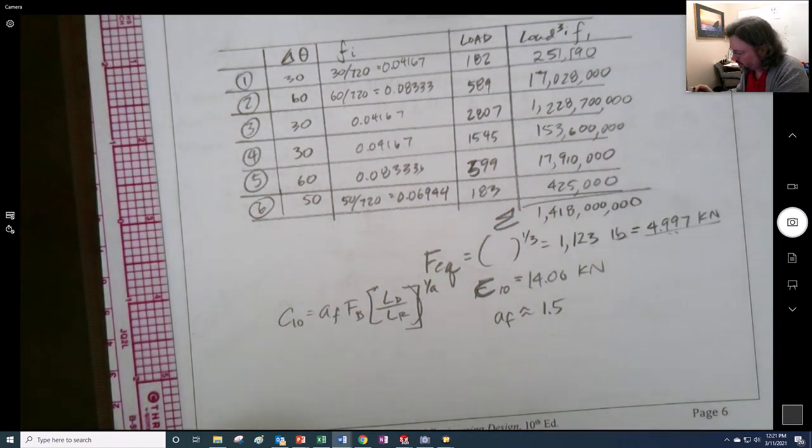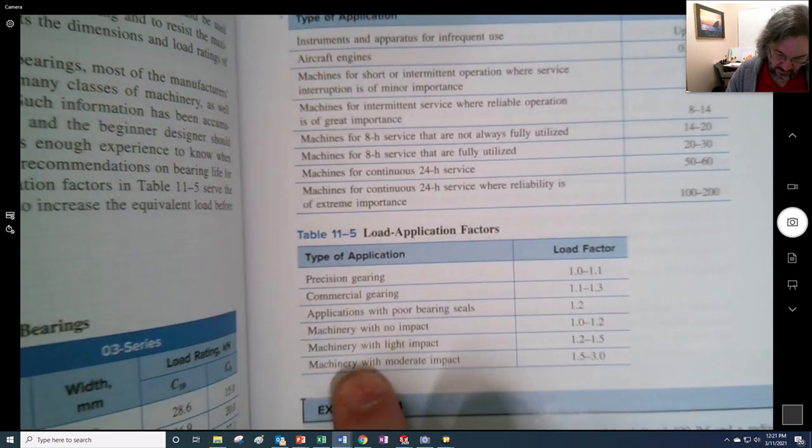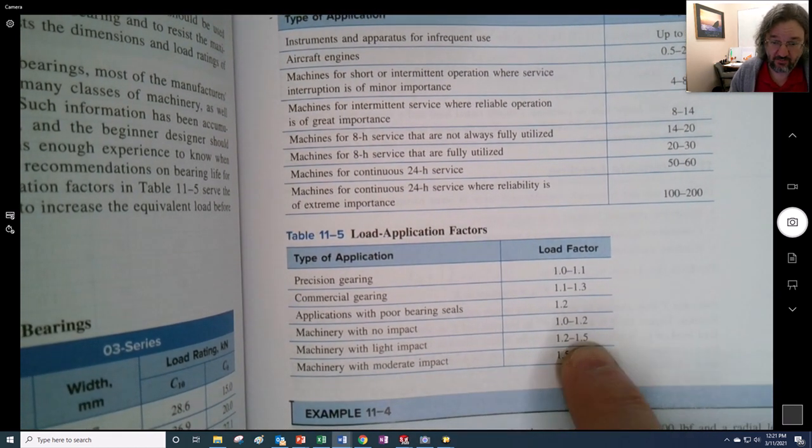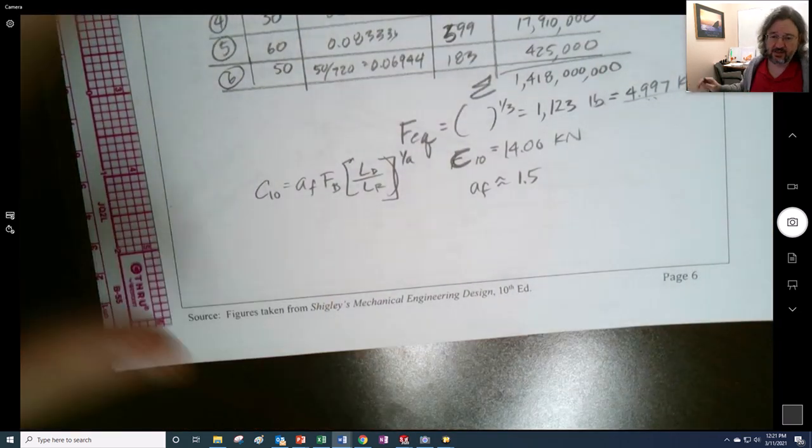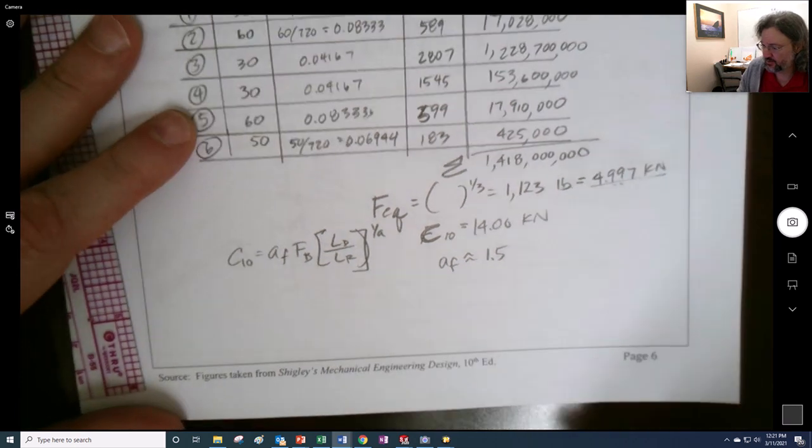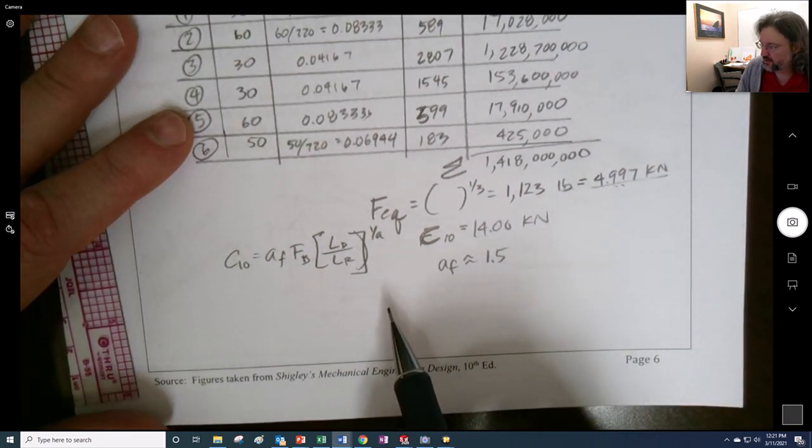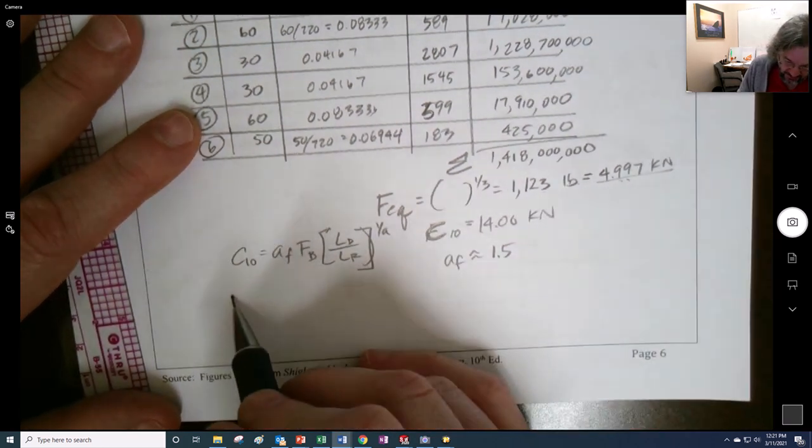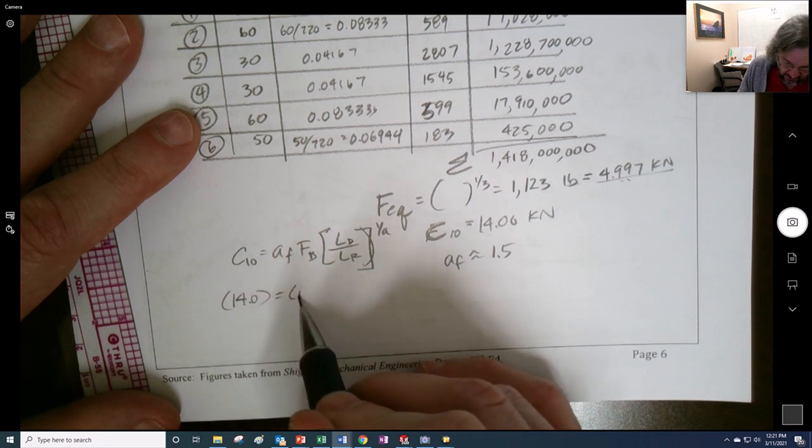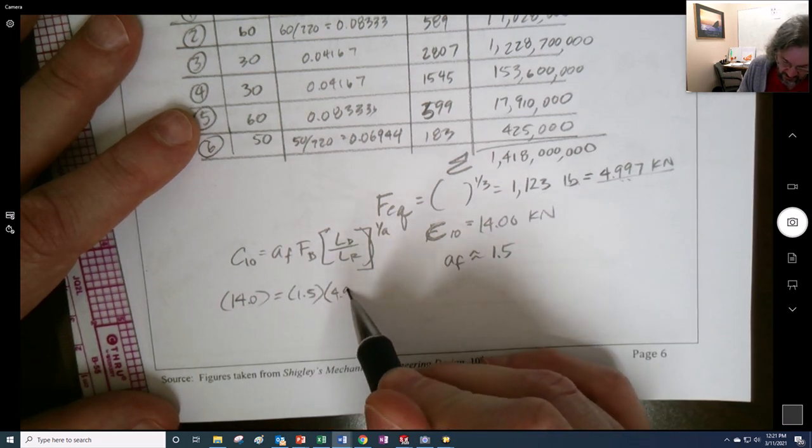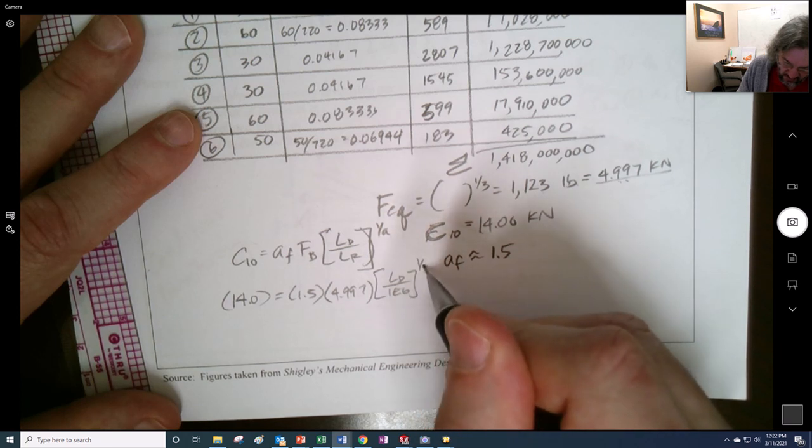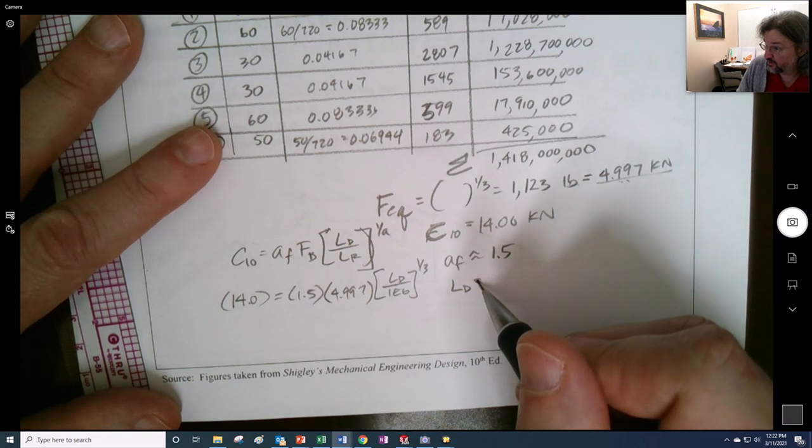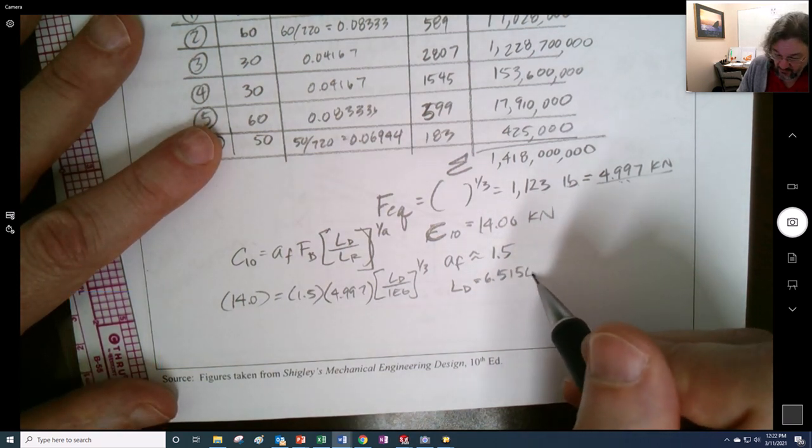And I say that I decide that I'm going to pick an application factor of 1.5. Like, how did I decide of an application of 1.5? Well, I looked up at table 11.5 in the book. Machinery with light impact with moderate impact. It's 1.5 here, 1.5 here, 1.5. I don't know. We're making an estimation. We're trying to figure out how long this bearing is going to live. So I stick this back, I put it in here. I say 14 equals 1.5, here's my 4.997. I take my LD and my 1,000,000, 1 over 3. I get LD, it was going to be equal to 6.515 E6 revs. So 6,515,000 revs.